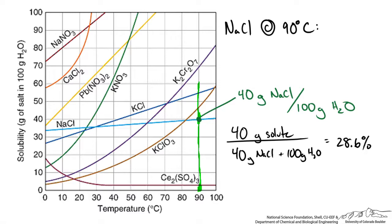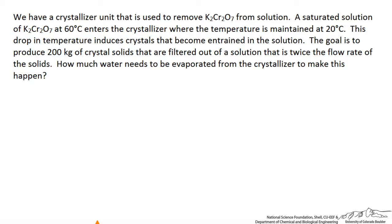So now let's use this type of diagram to help solve a material balance on a crystallizer unit. We have a crystallizer unit that is used to remove potassium dichromate from solution.